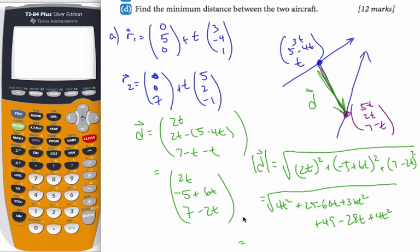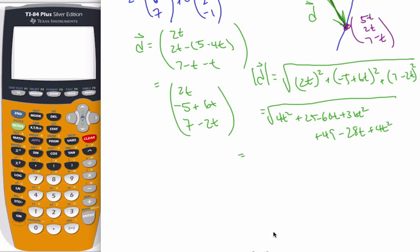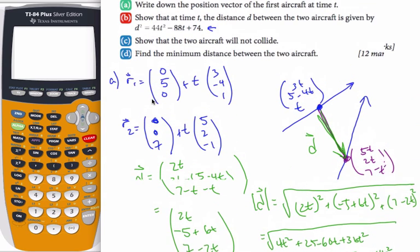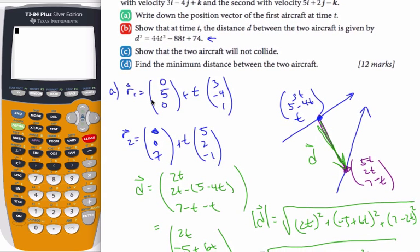Which is then, if I collect all my T's together, 36 plus 4 plus 4 more is 44T². I get a 28 and a 60, both negative, will give me a negative 88T. 49 plus that will give me plus 74. So D squared is going to be this. And let's hope that it's the same as what I was asked to show. Indeed, it is. That's D squared.